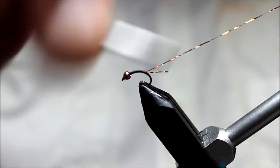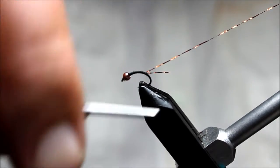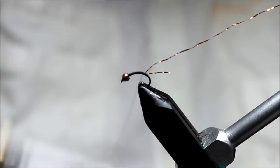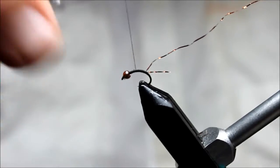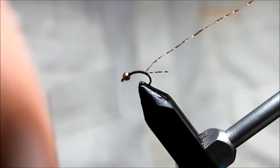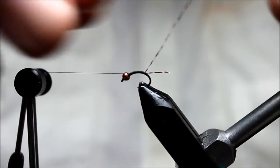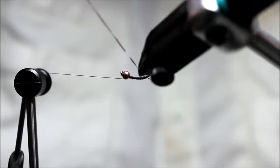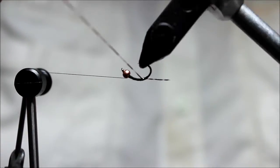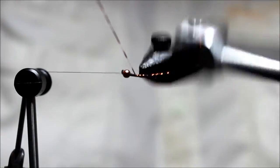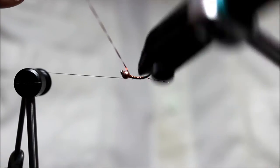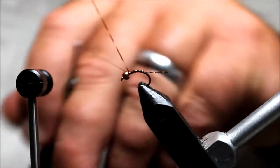I'm not going to worry about building up too much of a thread body or a taper. I like this to be a very slim profiled fly to help it sink quickly, but I do want to wrap enough to make sure that I've got coverage on the hook with my thread. I'm going to then create a ribbing or a ribbed effect with that crystal flash.